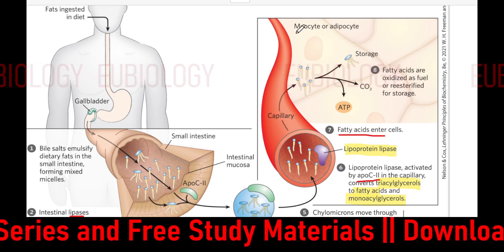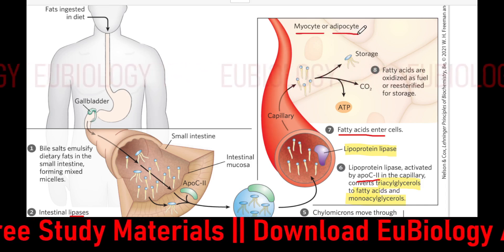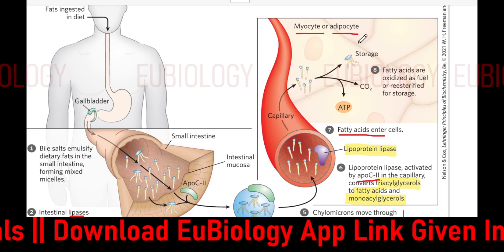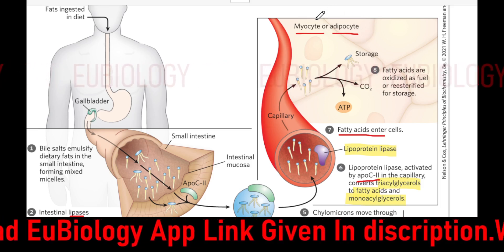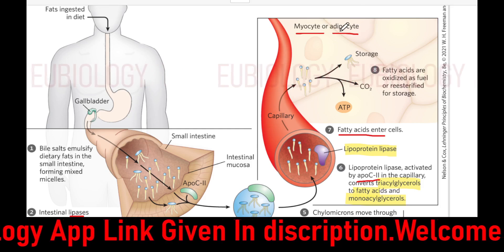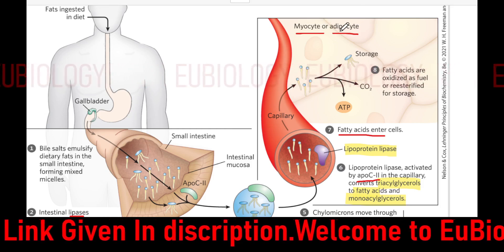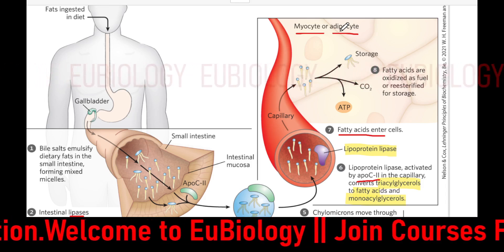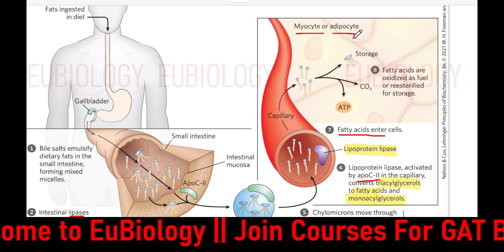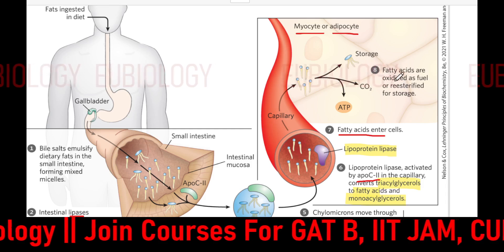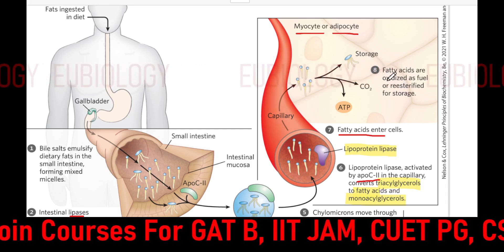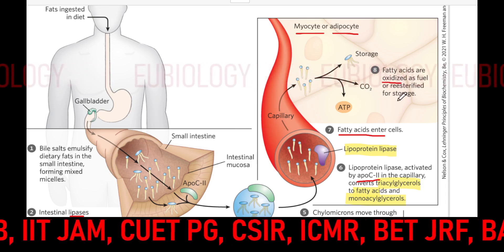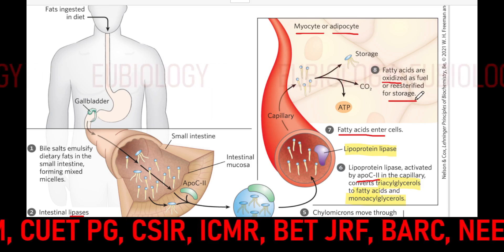Myocyte and adipocyte are the muscle cells and fat storage cells respectively. The adipocyte is the storage cell for fat — found in regions like the mammary gland and other areas. It is a fatty storage cell. Once the fatty acid enters the cell, either it can be utilized for energy through beta oxidation, or it will be re-esterified and stored into the cell.